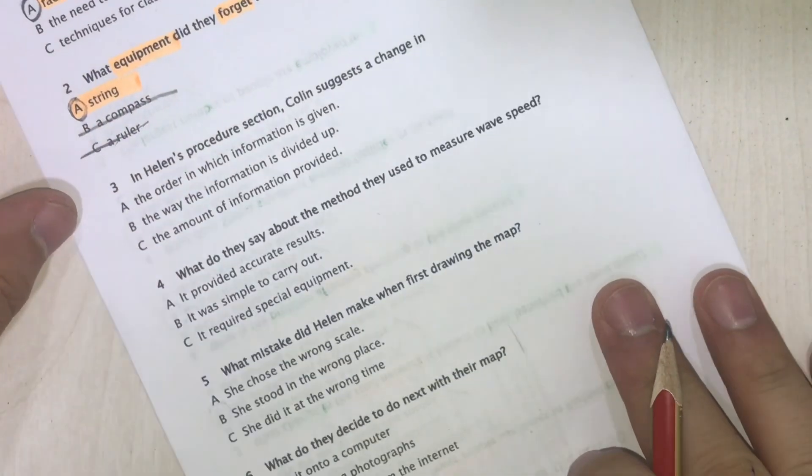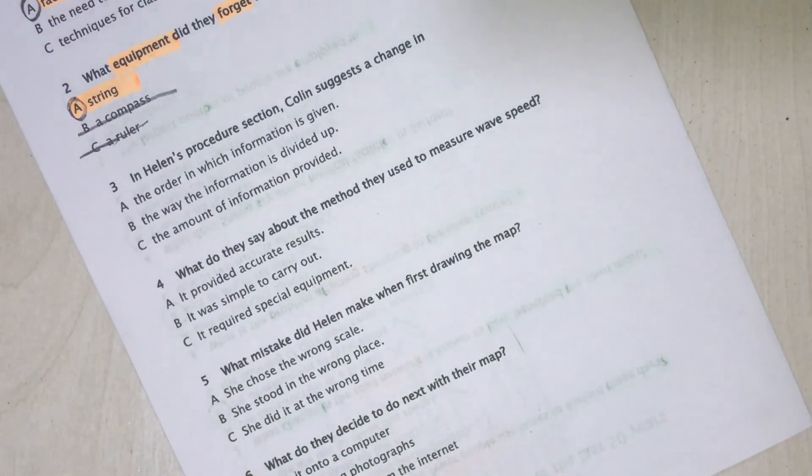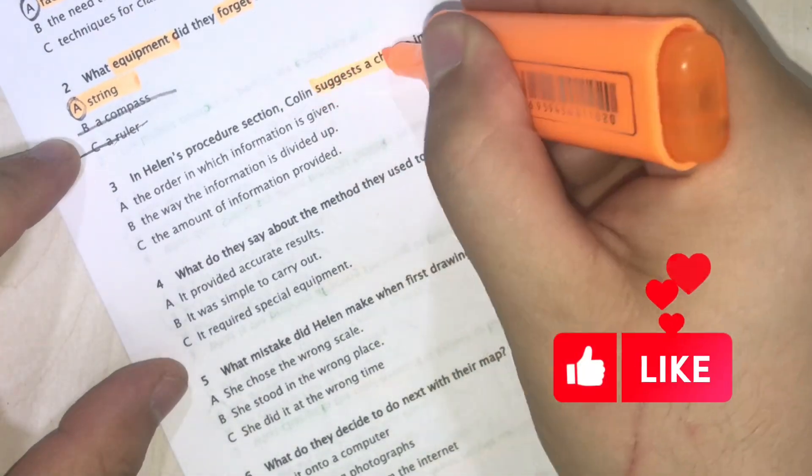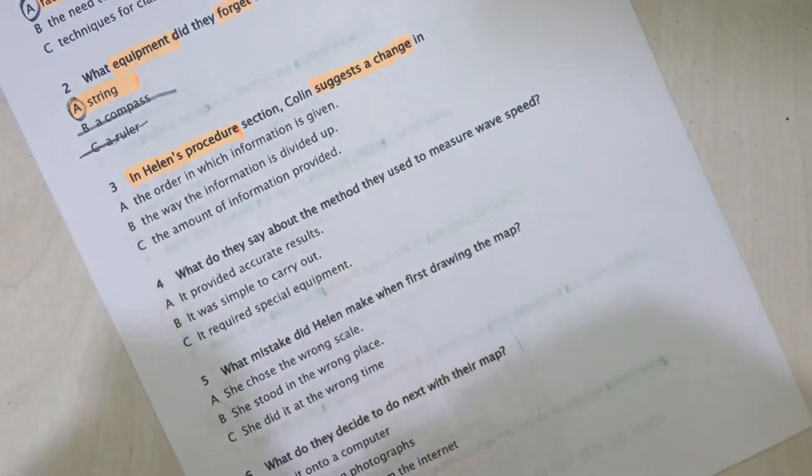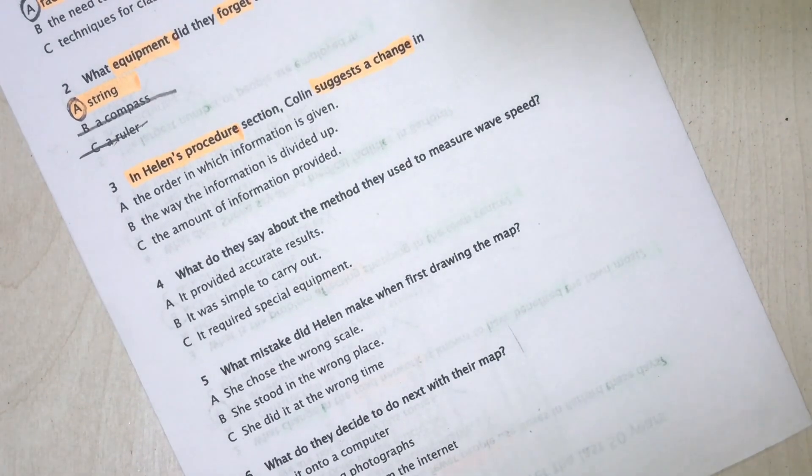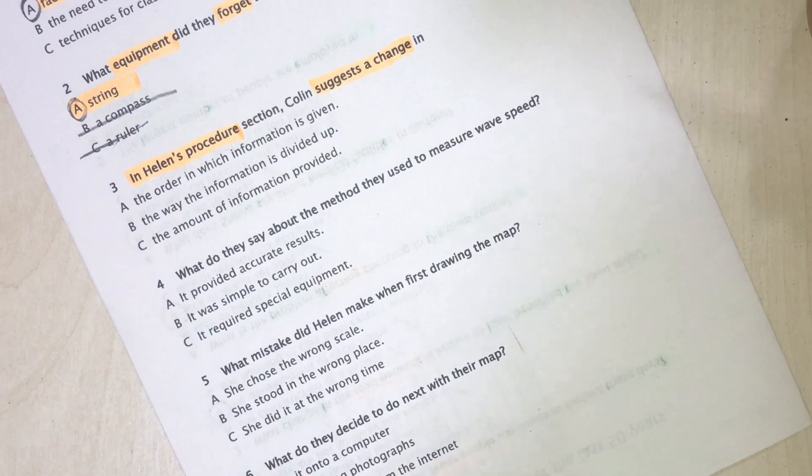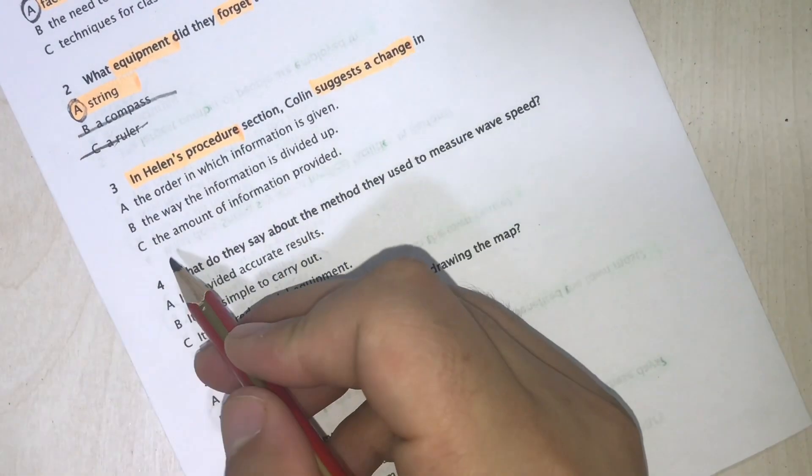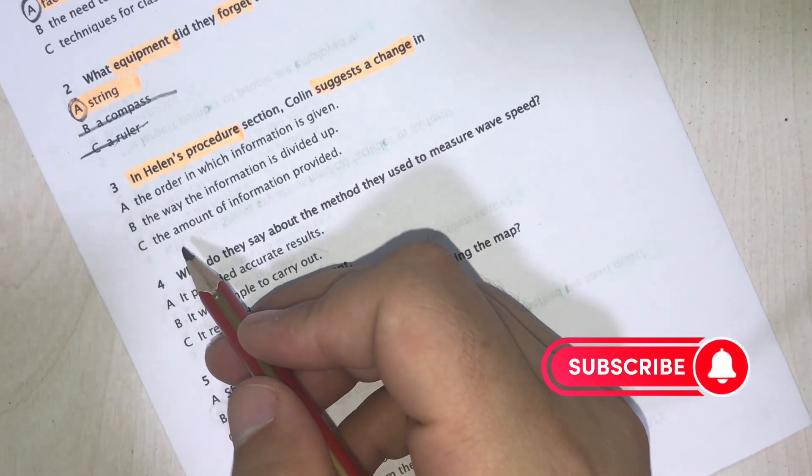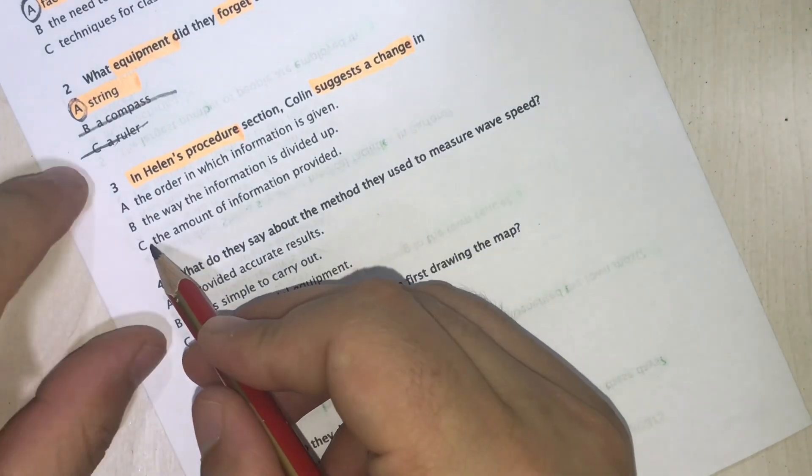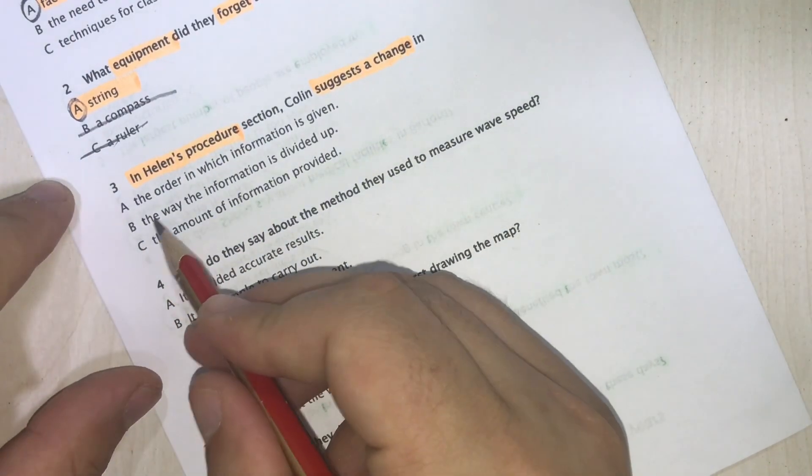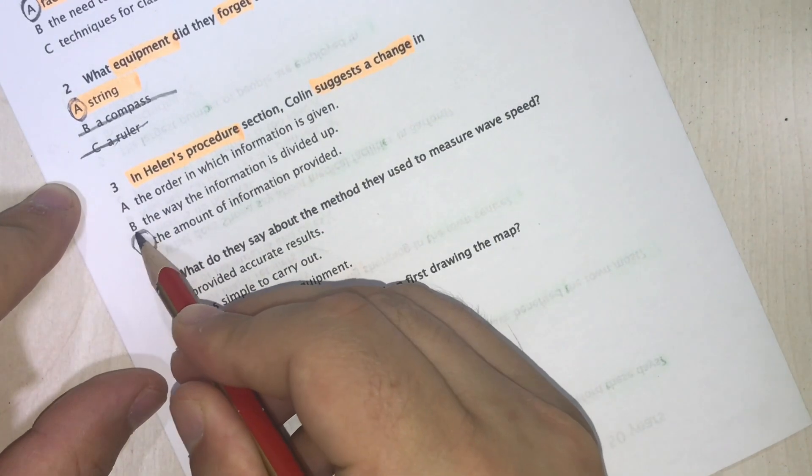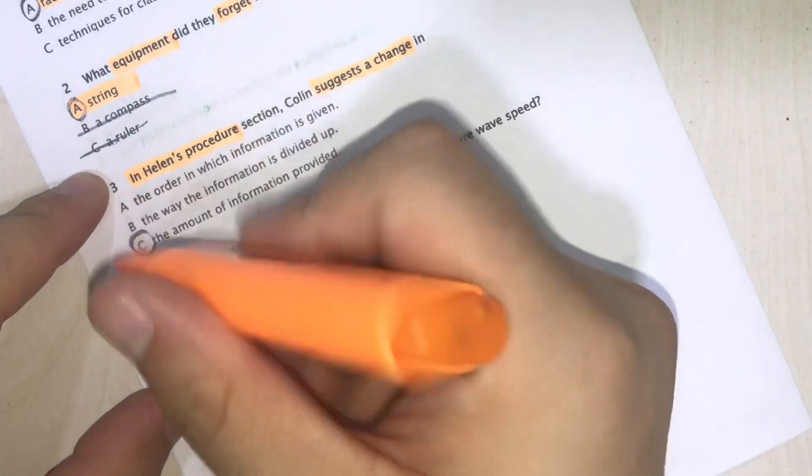In number three, in Helen's procedure section, Colin suggests a change. We have to find the change in Helen's procedure. Audio: 'It was clear, but I don't think we need all these details of what time we left and got back and how we divided up the research tasks.' 'Okay, I'll look at that again.' Here he gave information and help related to the amount of information provided. He said don't put too much information, so the answer is going to be C, the amount of information provided.